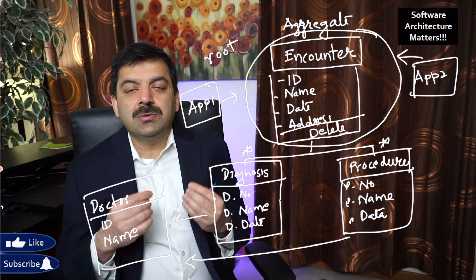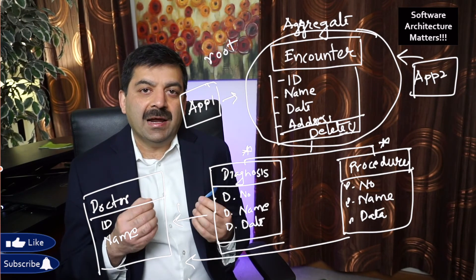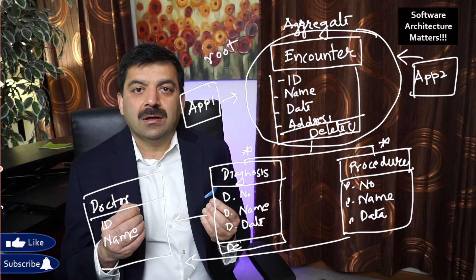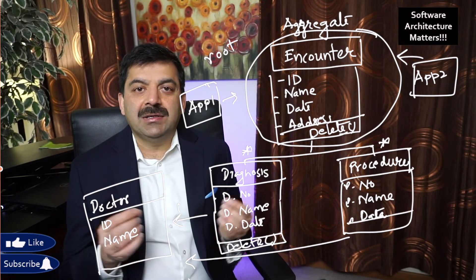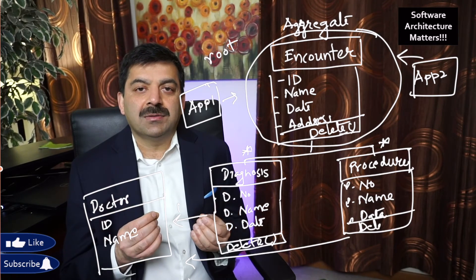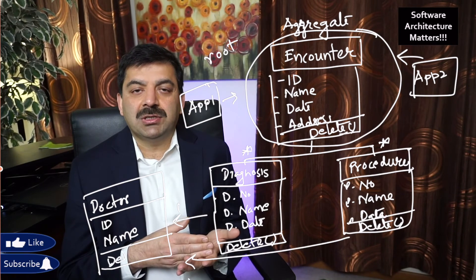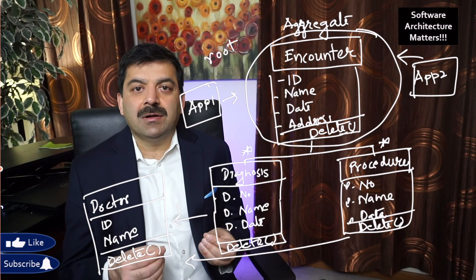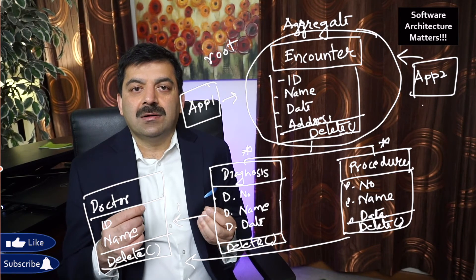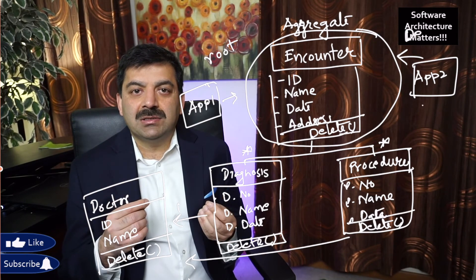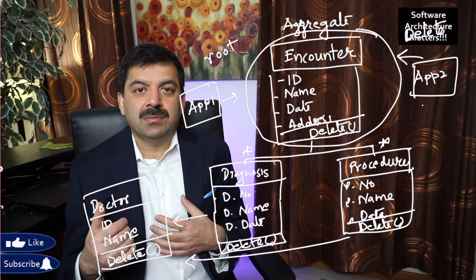So suppose you delete encounter. And at the end of the year you are clearing all the encounters, you are deleting all the patient records. If you delete an encounter, so this root object has to make sure that it needs to delete all the procedures, all the diagnosis, and all the doctor's information who perform the diagnosis and doctor's information who performed all the procedures.